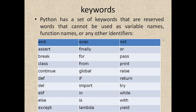Good afternoon. Today we'll study the next part from unit number one. The next topic is keywords. Keywords are the reserved words in Python that cannot be used as identifiers — identifiers are variables, function names, or class names.